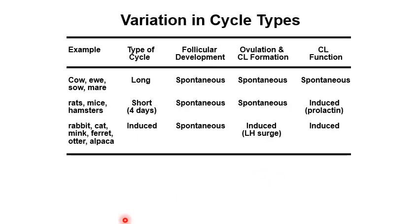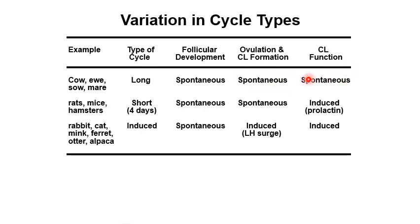This diagram shows the variation of cycle types of domestic animals. The first group — cow, ewe, sow, and mare — has a long cycle of about 21 days. For these animals, follicular development, ovulation, and CL function are considered spontaneous, meaning these events occur naturally without being induced. After ovulation, the CL is formed automatically.